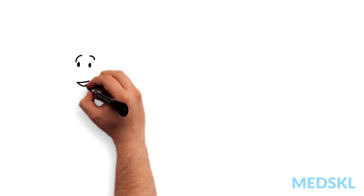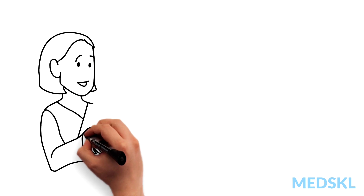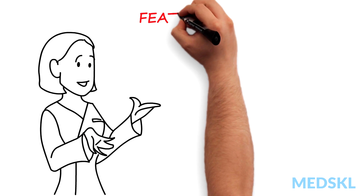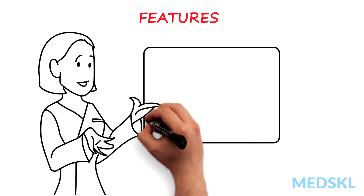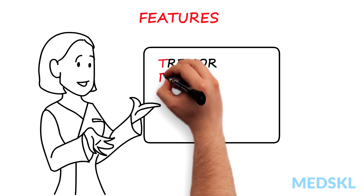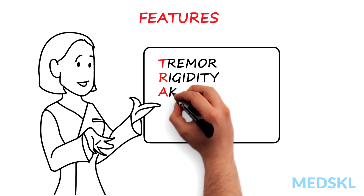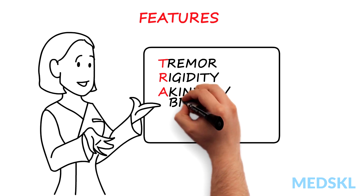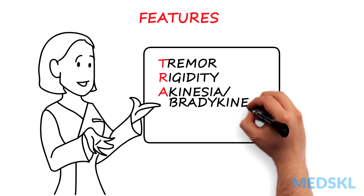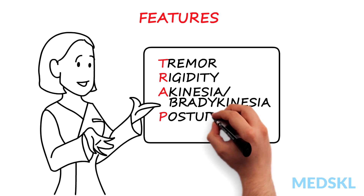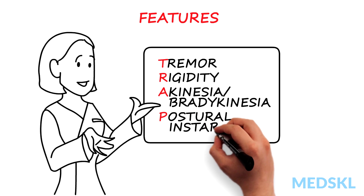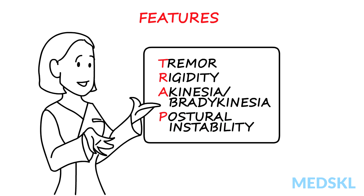The cardinal features of PD are tremor, rigidity, akinesia or bradykinesia, and postural instability, easily remembered with the mnemonic TRAP.